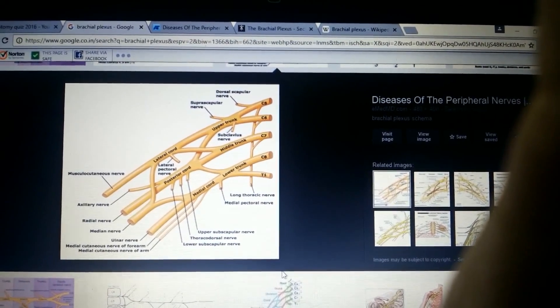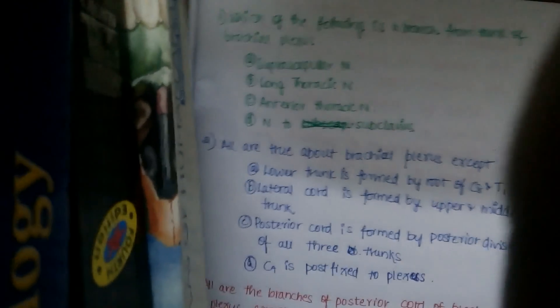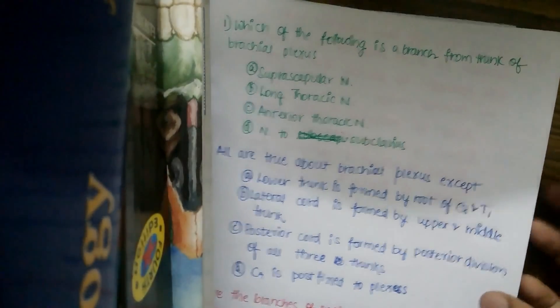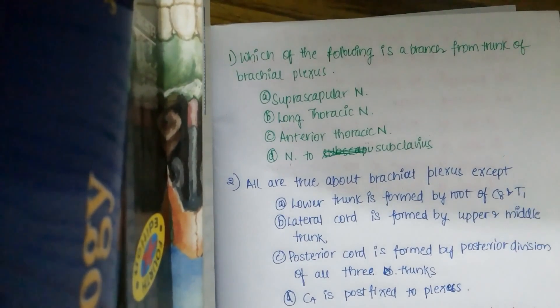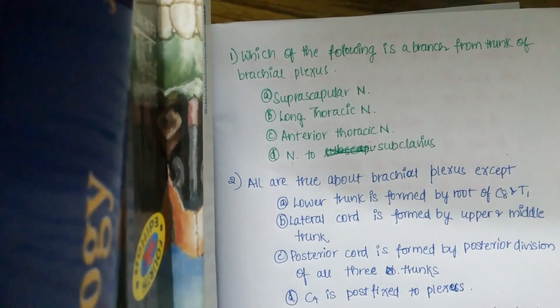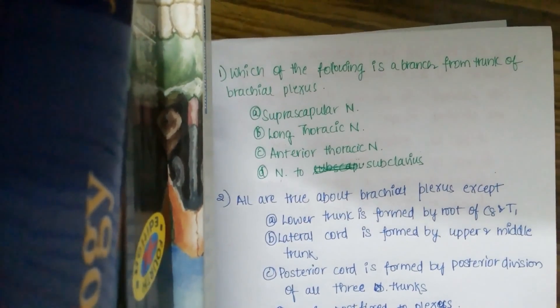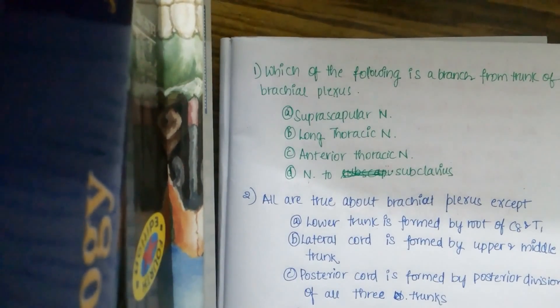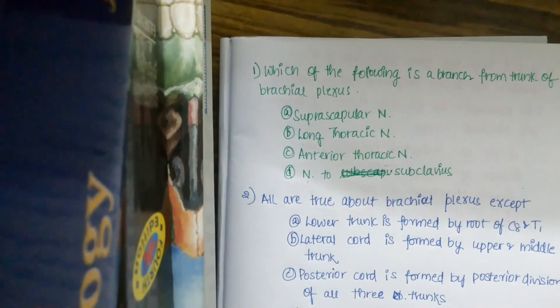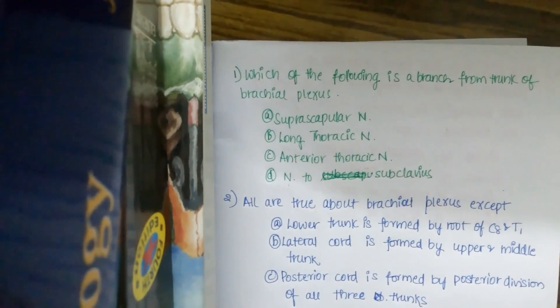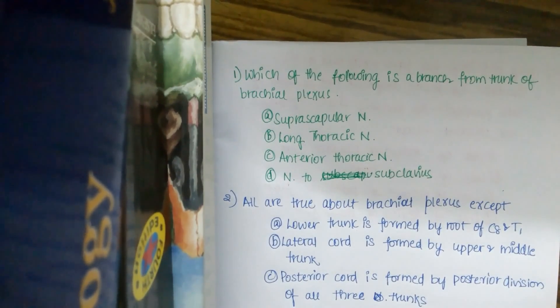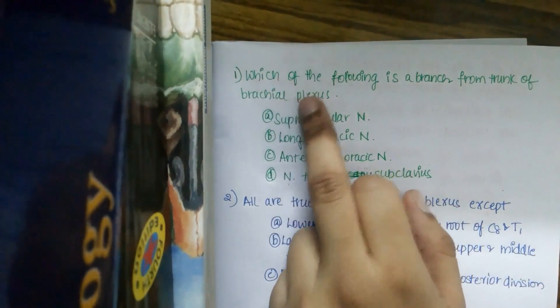These are all the branches, cords, trunks, and roots of the brachial plexus. Based on this, let us answer these questions. If you didn't get the brachial plexus, just give a comment and I'll explain it in detail again.